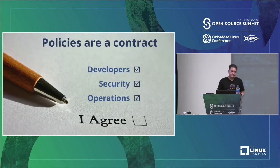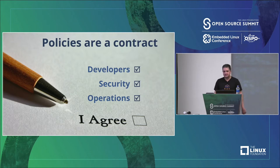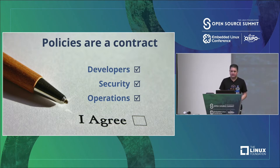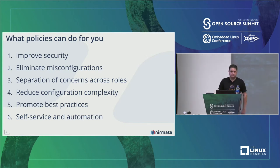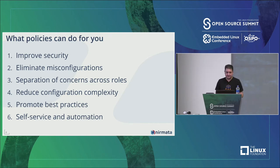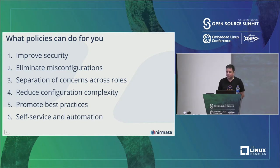Policies serve as a contract between the different roles and personas in Kubernetes. You have developers who want to deploy applications and manage workloads, security folks making sure the right security configurations are specified in every workload and namespace, and operations teams responsible for managing clusters and shared services. Policies bring all these roles together — it's an enabler of DevSecOps at scale, improving security posture, eliminating misconfigurations, and promoting best practices and more self-service automation.